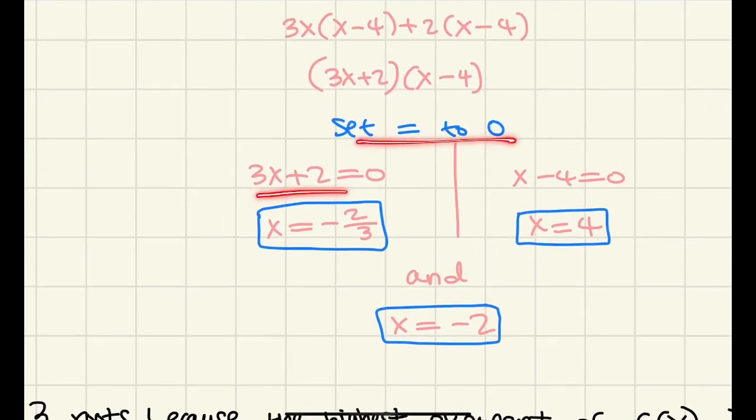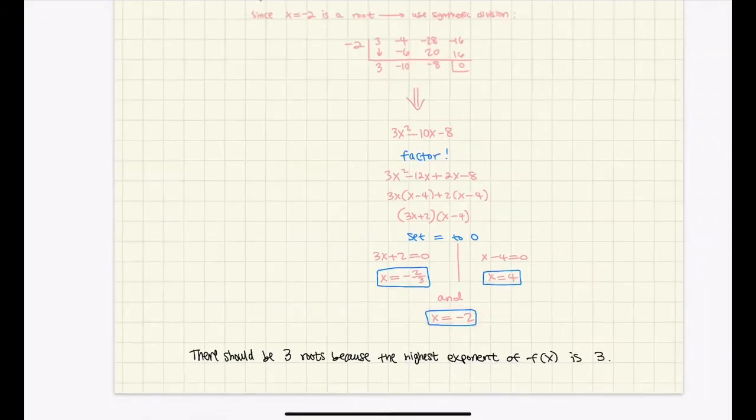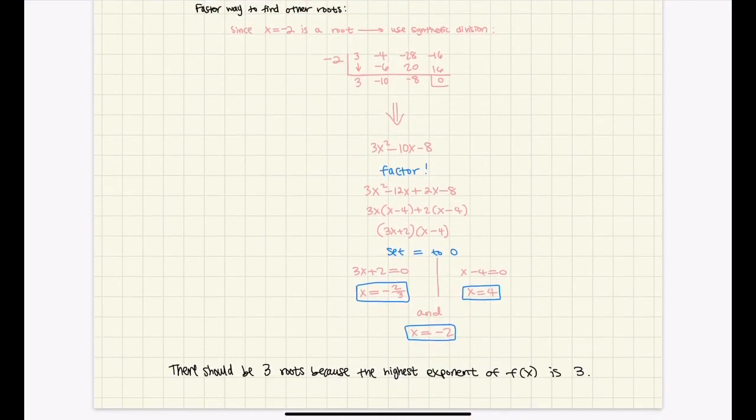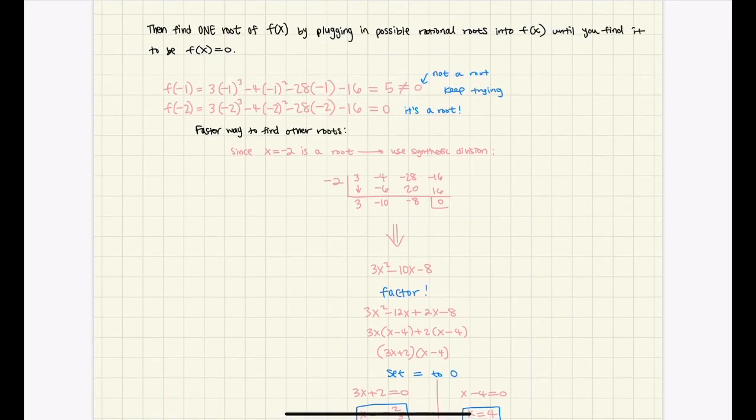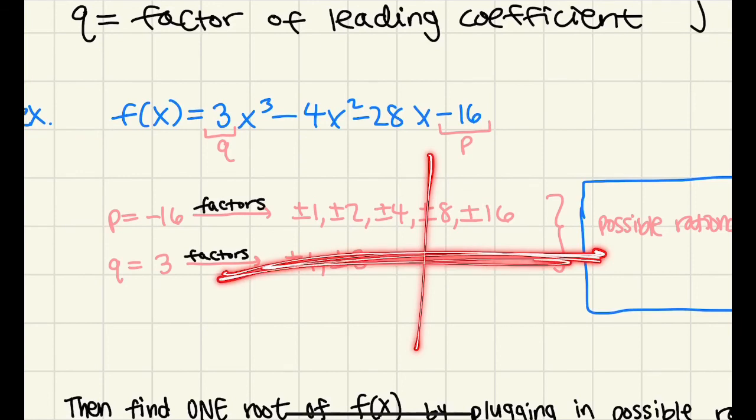And yeah, you would solve for x, and you would get this, and this. And also don't forget that negative 2 is also a rational root, because we used that value to find the other roots. So there should be 3 roots, because the highest exponent of f of x is 3. So as you can see here, the highest exponent is 3, meaning that it crosses the x-axis 3 times. Thank you for watching.